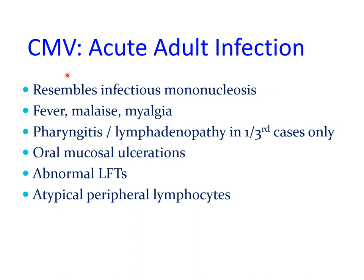Acute cytomegalovirus infection in adults shares many features with infectious mononucleosis caused by Epstein-Barr virus. Both can be transmitted through intimate contact and kissing, and both present with features of glandular fever — fever, malaise, and lymphadenopathy — although pharyngitis and lymphadenopathy are less common in cytomegalovirus infection. In addition, there could be oral mucosal ulcerations, and laboratory tests may show abnormal liver function tests and atypical peripheral lymphocytes.